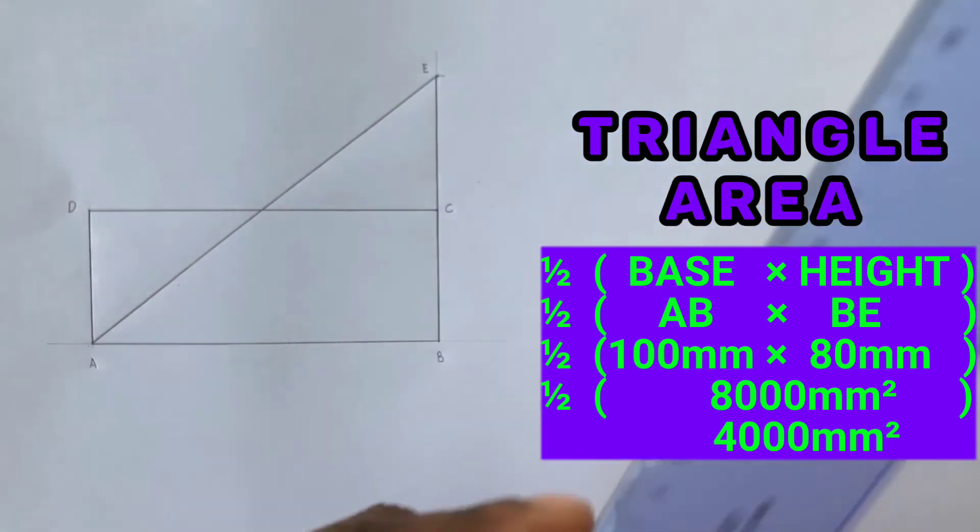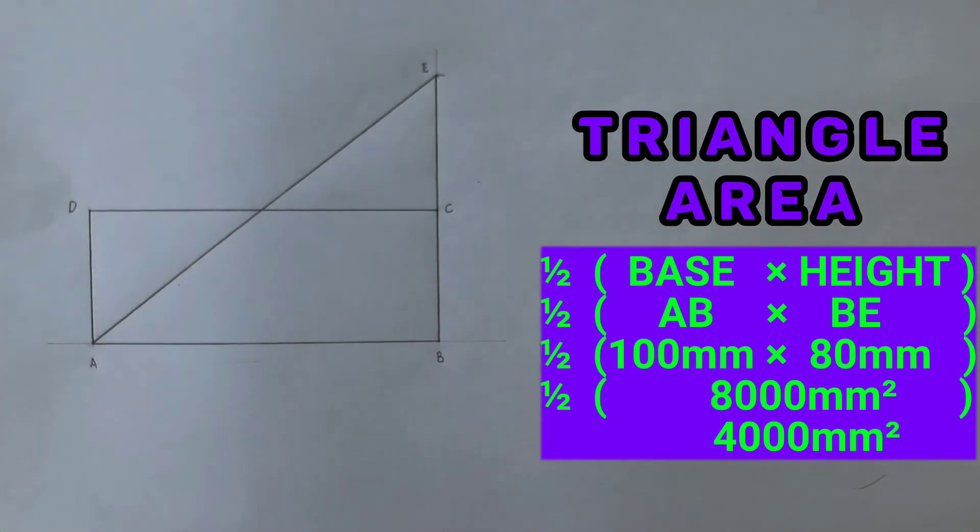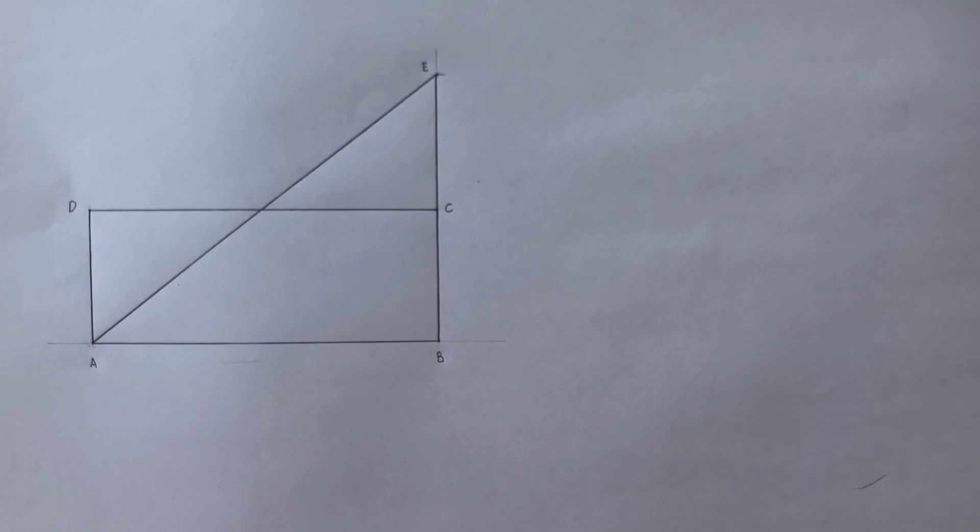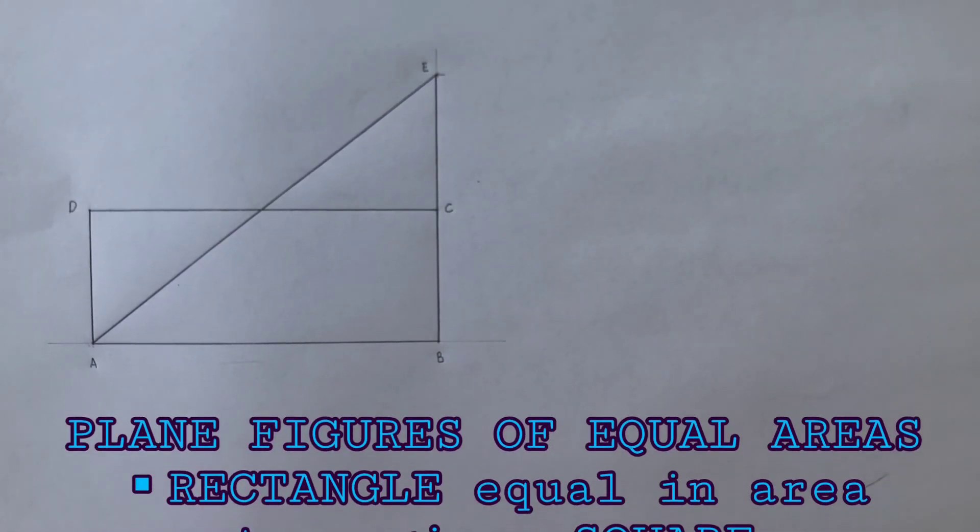Using the formula half base times height, the area of this triangle is 4000 millimeters squared. You may now border your paper and complete your title block.